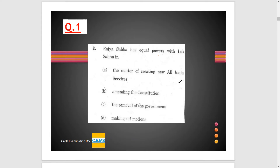The first question is talking about Rajya Sabha's equal power with Lok Sabha. Looking at the options, the first is making a cut motion. If you know that cut motion is only introduced in Lok Sabha, then it is the power of Lok Sabha and not Rajya Sabha, so you can easily remove this option.